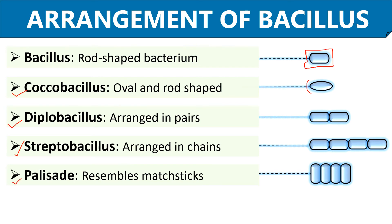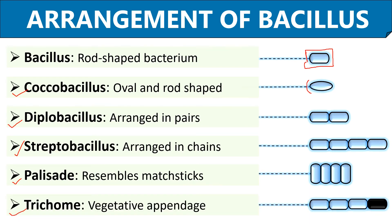Palisade is an arrangement of rod-shaped cells in a side-by-side sequence that closely resembles the arrangement of matchsticks in a matchstick box. Trichome is another type of arrangement where a rod-shaped bacterium possesses a vegetative appendage, and the cells form a chain which closely resembles a string of Streptobacilli. In all these arrangements, cell division occurs only in one plane.